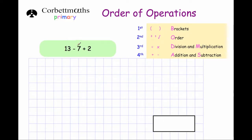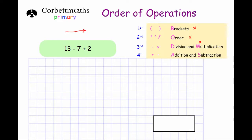Our next question is 13 minus 7 plus 2. This is interesting because there's no brackets, no squaring or cubing, and no divisions and multiplications — we've just got additions and subtractions. Whenever you've just got additions and subtractions, you work from left to right. You don't think you have to do the addition before the subtraction — it doesn't work like that. So we do 13 take away 7, which is 6, giving us 6 plus 2, and 6 plus 2 is equal to 8. Our answer is 8.